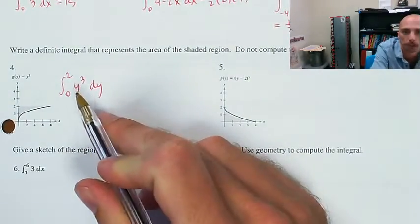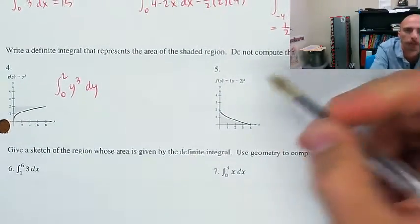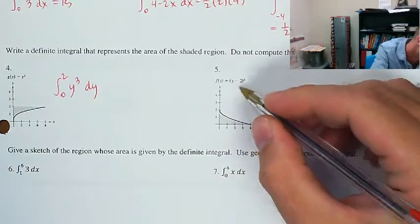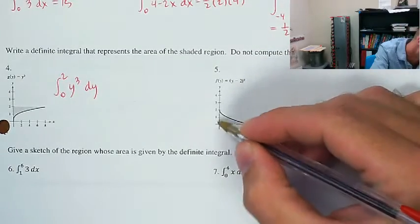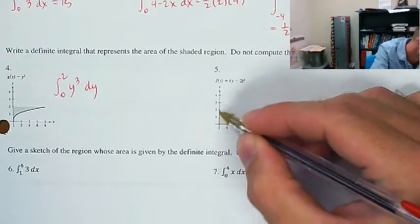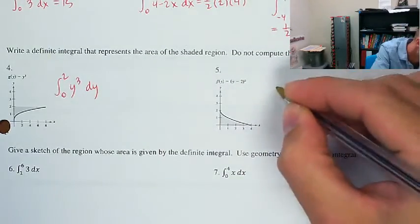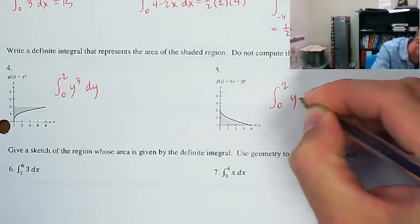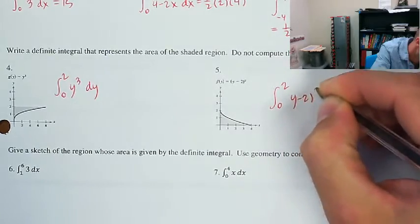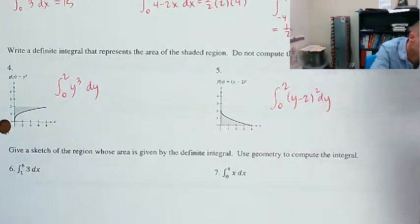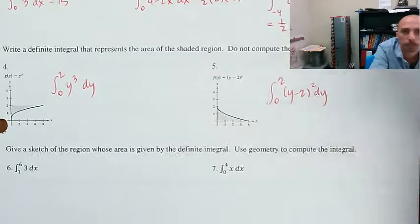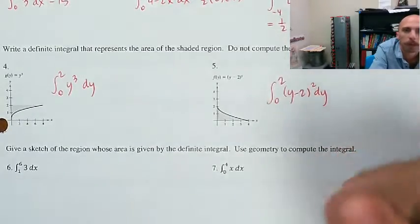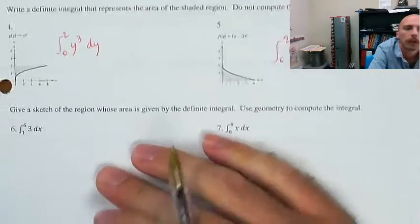Next time I will show you how to compute that by hand. This is going to be the integral as y runs from 0 to 2 of (y minus 2)². Again, I will show you how to compute that next time.